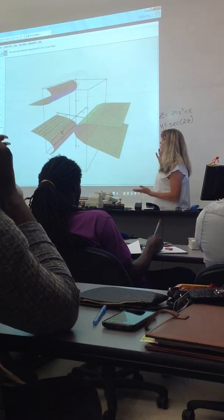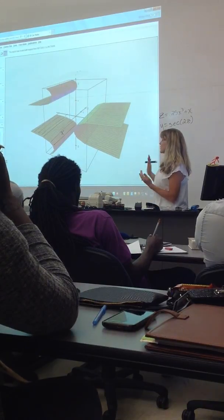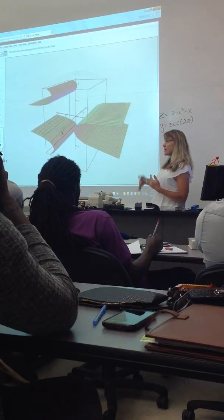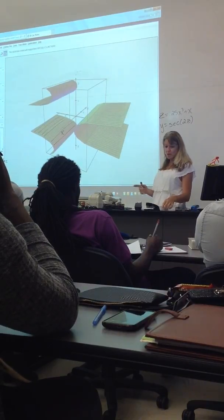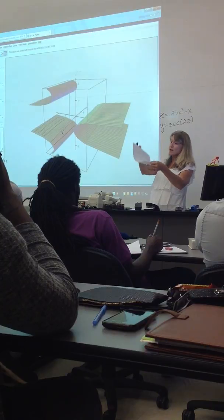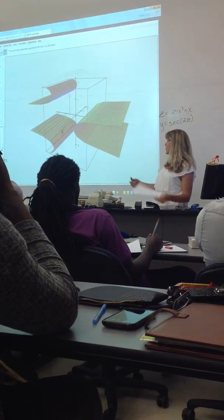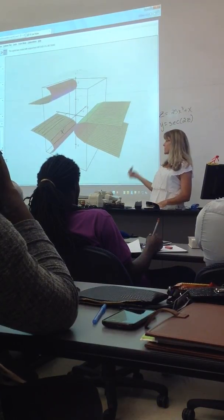All right, so we're trying to get exposed to different ways to come up with equations for different kinds of surfaces. One type of surface is a surface that can be made by bending a piece of paper. It's technically called a cylinder.